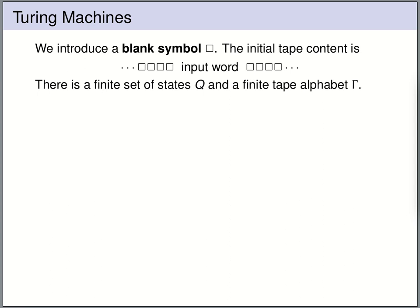For a Turing machine, the initial tape content looks like this: the input word is written on the tape, and left and right of the input word we have only blank symbols — the blank symbol is denoted by this box. A Turing machine has not only an input alphabet sigma but also a finite tape alphabet gamma. The blank symbol is part of the tape alphabet but not part of the input alphabet, allowing the machine to compute with a larger alphabet.